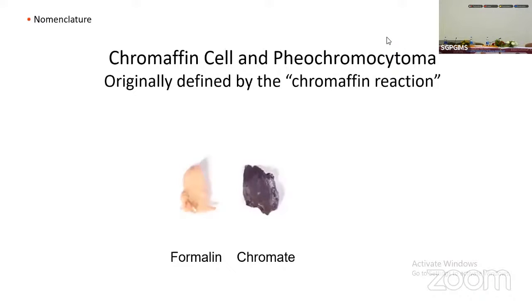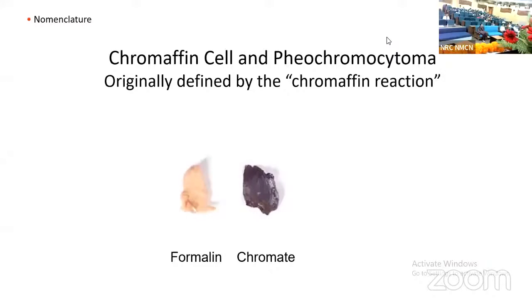Our nomenclature for pheochromocytoma and paraganglia was originally described by the chromaffin reaction. In the mid-19th century, researchers in a variety of countries were using rather primitive histochemical techniques to determine what substances were produced in different cells. It was found that if you fix a piece of adrenal medulla in ordinary fixative, not very much will happen. However, when the same tissue is fixed in a solution of chromate salts, a dark reddish brown color develops. It was believed that this color change resulted from a specific affinity for chromium.